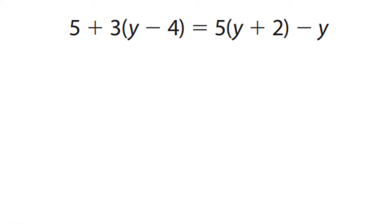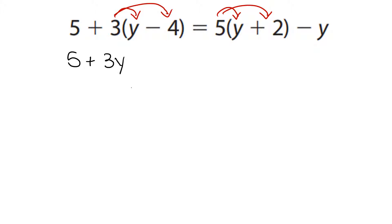For this problem, our first step is to distribute — we multiply both sets of parentheses. I can bring down the 5 because I didn't use it. 3 and y make 3y. 3 and 4 make 12, so I bring down the minus. I put my equal sign. 5 and y makes 5y. 5 and 2 makes 10. And I bring down the minus y at the end.